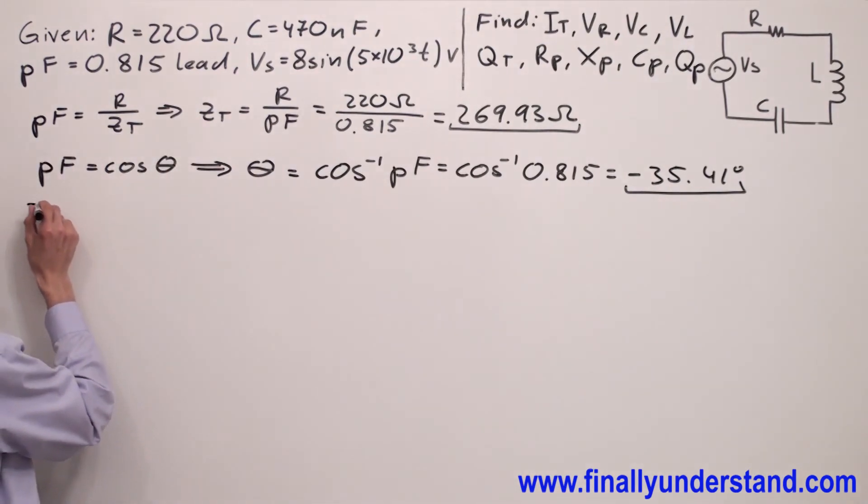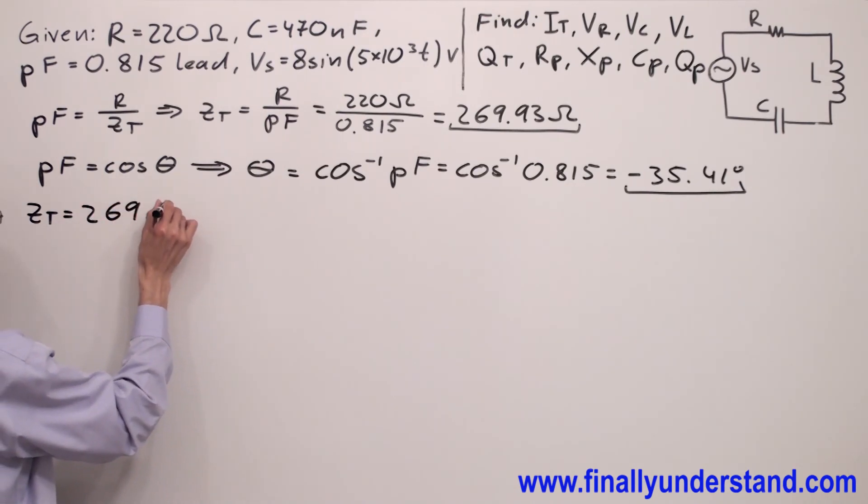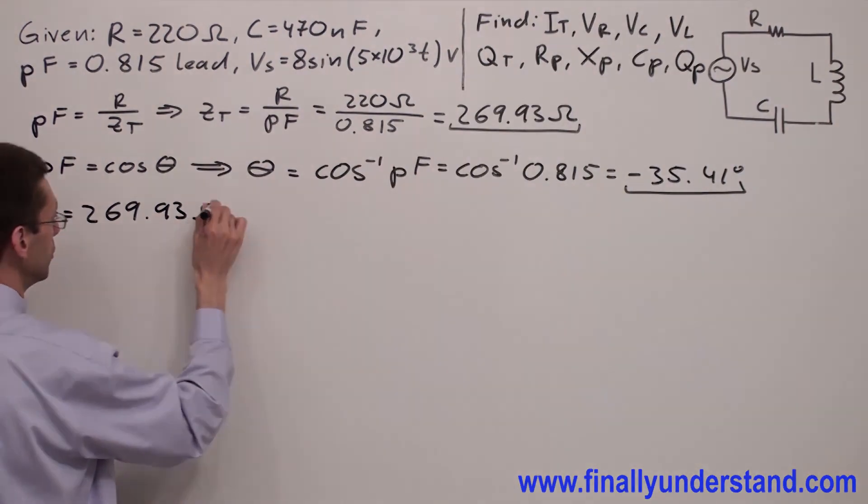So I can write that my Z total has a value of 269.93 ohms and